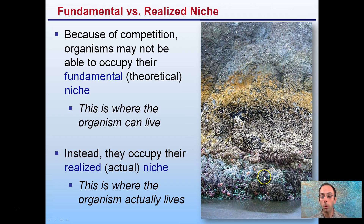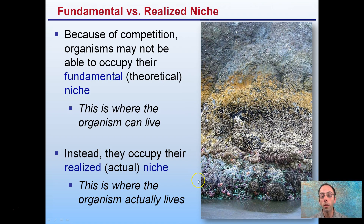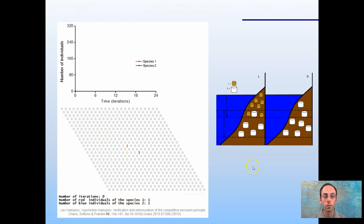In contrast, the blue, green, and pink organisms may also be able to live over the entire rock, but they may be outcompeted in the upper zone. They need a little more moisture and water. Therefore, their realized niche is very close to the low tide mark.